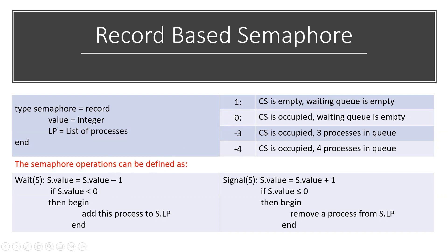For the second scenario, if the value is 0: 0 minus 1 equals minus 1. Since S dot value is less than zero, we enter the begin block — we add this particular process to the waiting queue, which is S dot list of processes. The critical section is occupied and the waiting queue now has one process. So the process is blocked and added to the list.